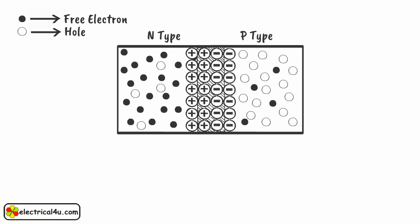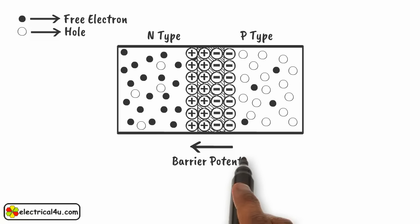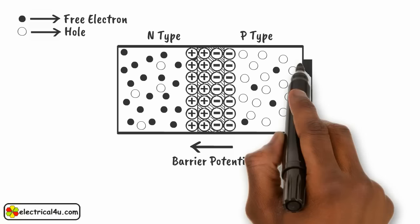Due to the presence of these positive and negative ions, a static electric field called barrier potential is created across the junction. It is called barrier potential because it acts as a barrier and opposes the further migration of holes and electrons across the junction.